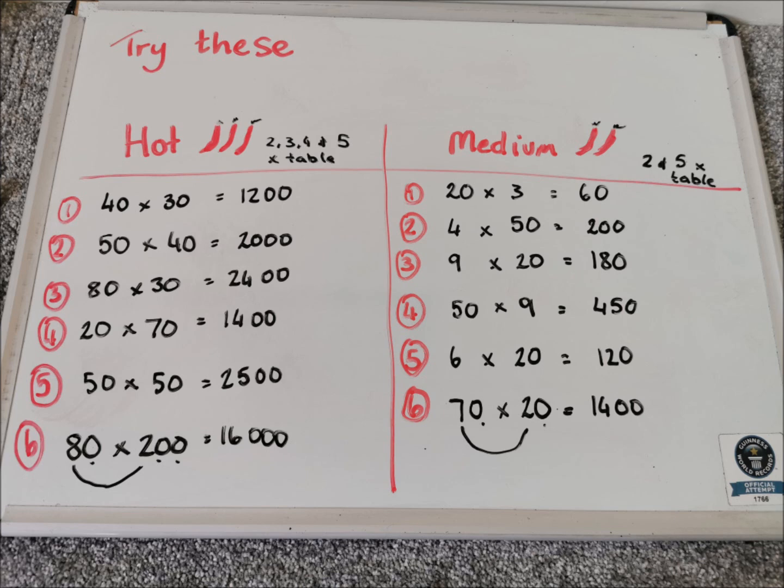50 times 40 is 2,000. 80 times 30 is 2,400. 20 times 70 is 1,400.